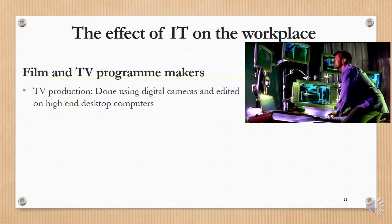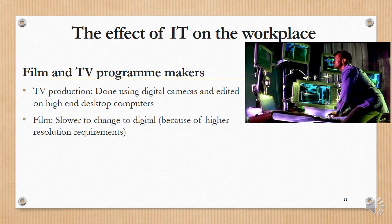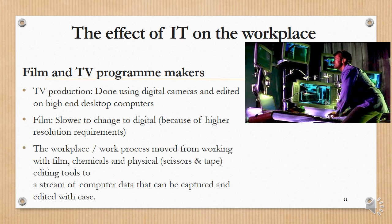For film and TV program makers, TV production can be done using digital cameras and edited on high-end desktop computers. For film, things have been slower to change to digital because movies are played on huge screens in movie theatres and the resolution required is much higher. The workplace and work process moved from working with film, chemicals, and physical scissors and tape editing tools, to a stream of computer data that can be captured and edited with ease.